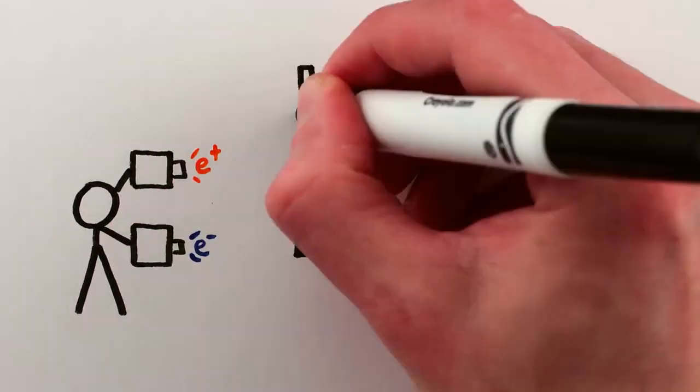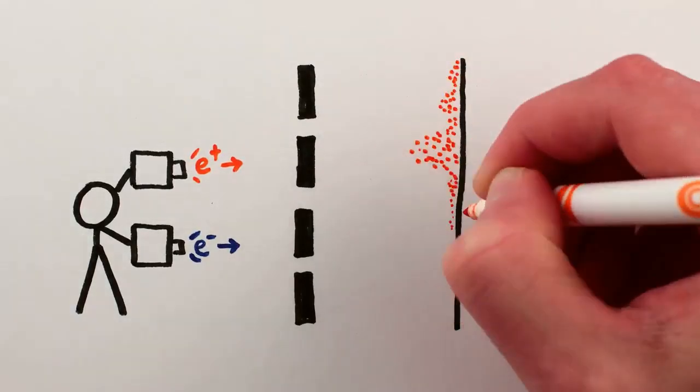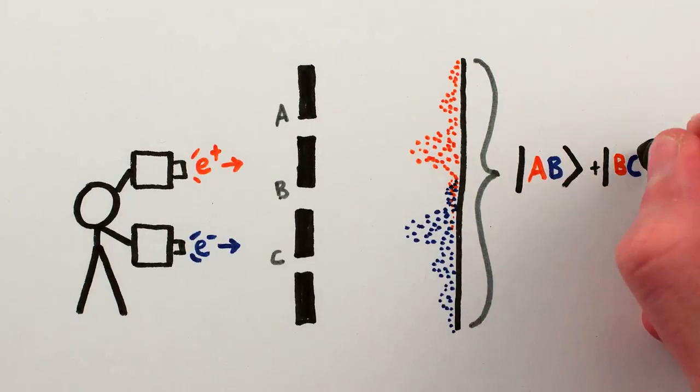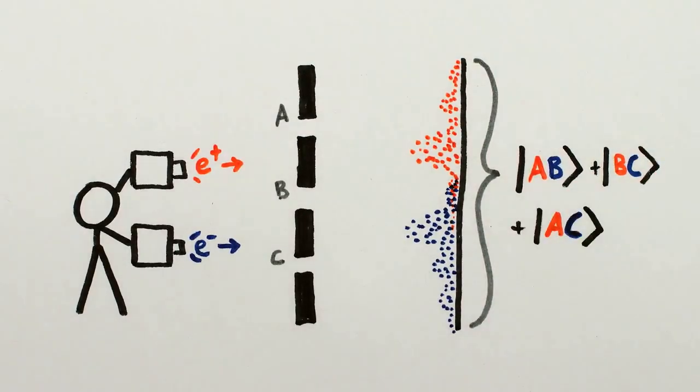And the quantum double-double-slit experiment, whether you do it with cats or with electrons or photons, is fully consistent with the predictions and experimental results of quantum mechanics. Sometimes, the universe is just weird.